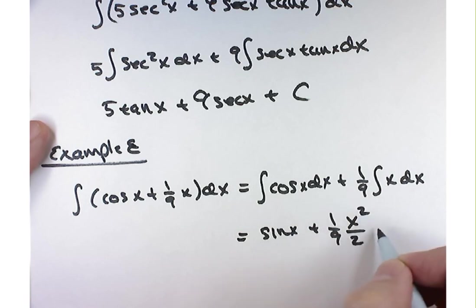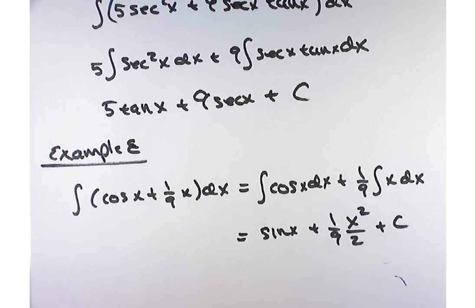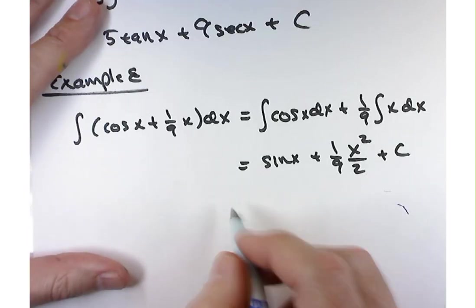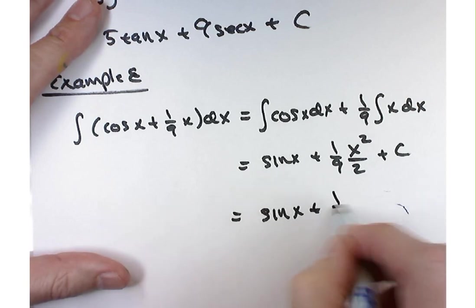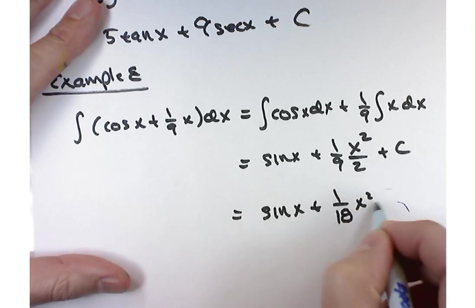And then what else do I need, gentlemen? Let's see. I need plus that constant, right? I always need that constant of integration. So that's sine of x plus 1 over 18 times x squared plus a constant.